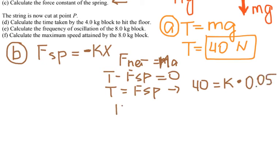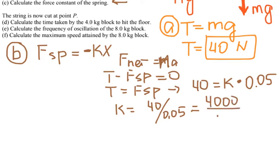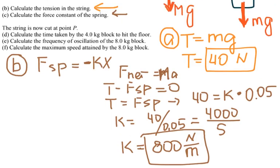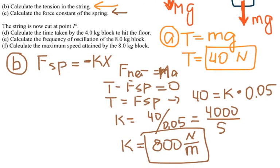So k = 40 divided by 0.05. Multiplying top and bottom by 100 gives k = 800 newtons per meter. That is the answer for part B — calculating the force constant of the spring.